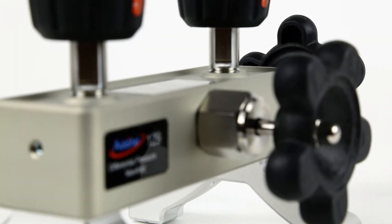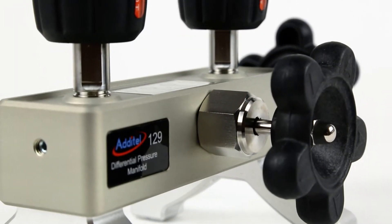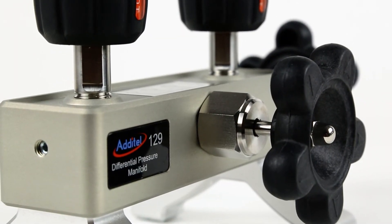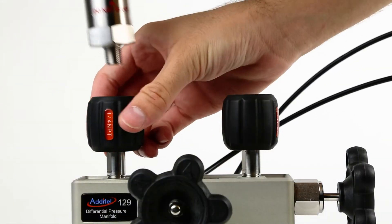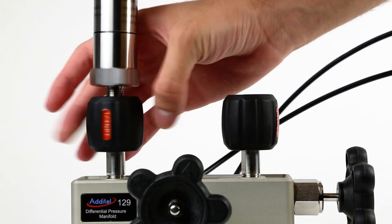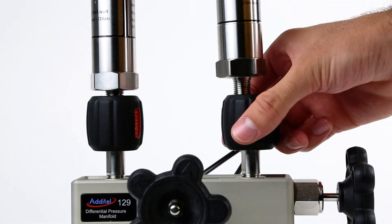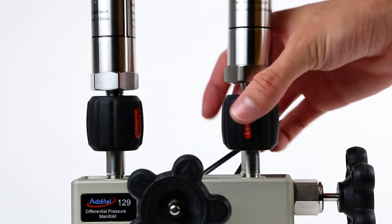Additel's 129 differential pressure manifold is designed to easily help achieve the high static pressure accuracy. Each manifold has two pressure ports with Additel's easy-to-use hand-tight quick connectors, where the two digital pressure modules will be connected.